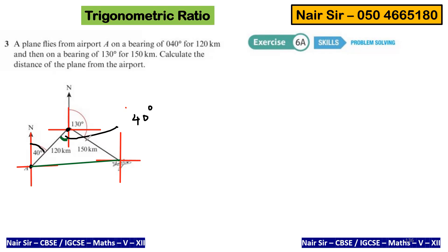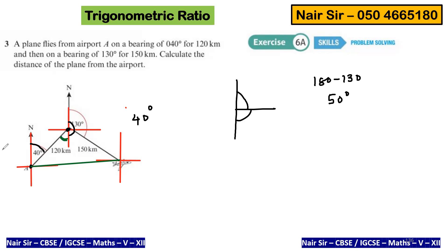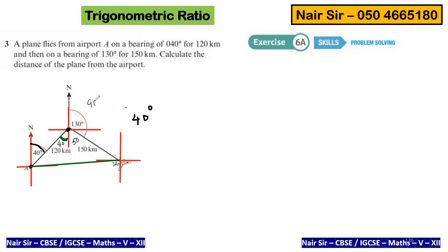Now can you tell me something about this angle? What is the total angle? It's a linear plane — I know this angle. Can I find this one? 180 minus 130 gives me 50 degrees. So I have this angle as 50 degrees and this angle as 40 degrees. What does 40 plus 50 make? It makes 90 degrees.